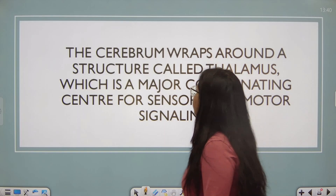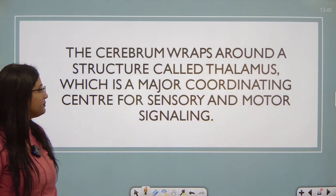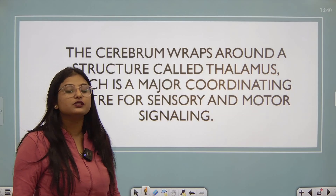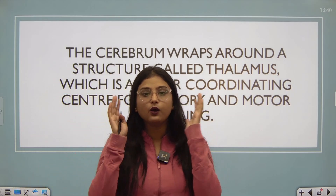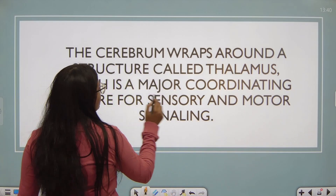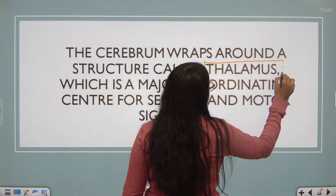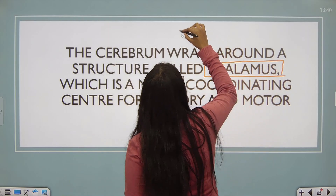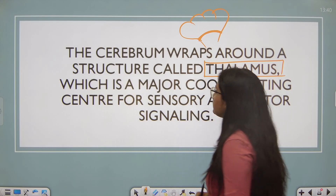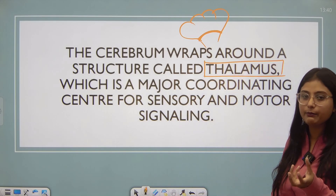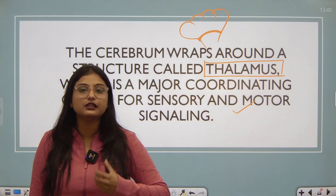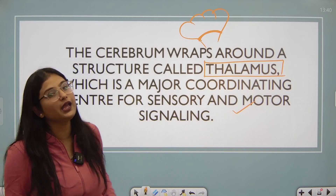The cerebrum wraps around a structure called the thalamus, which is the major coordinating center for sensory and motor signaling. So the sensory and motor signals are identified by those areas, but for directing those signals further, the major role is played by the thalamus. The entire cerebrum wraps around the thalamus.